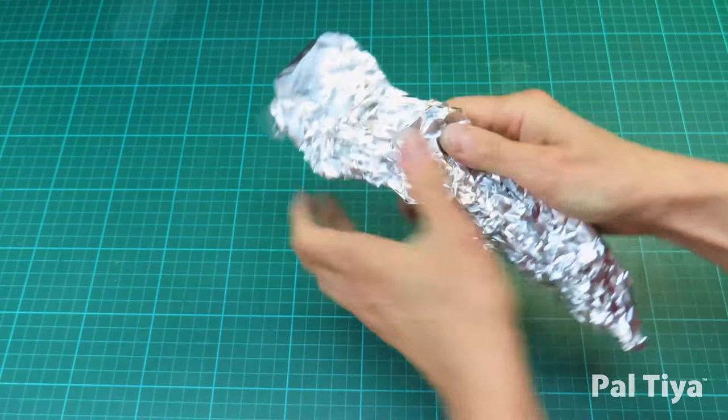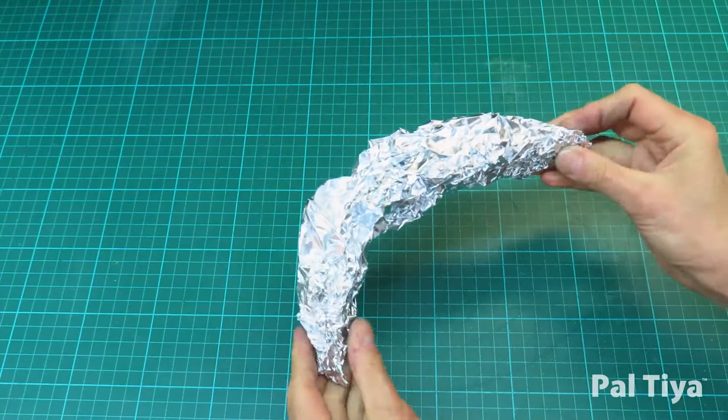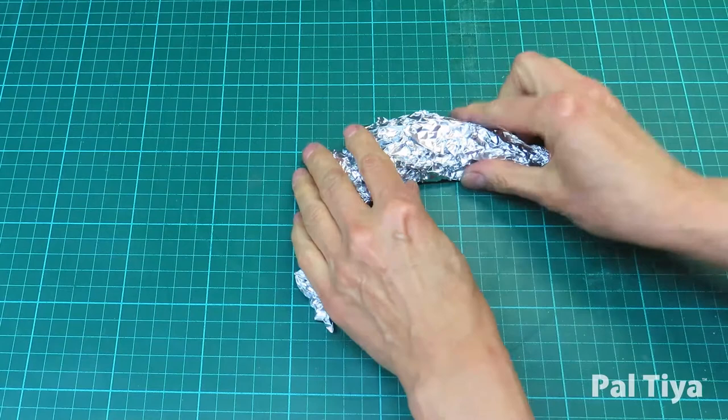Begin by crumpling your tinfoil and making a longish banana shape. Continue to shape using hands and your tool.